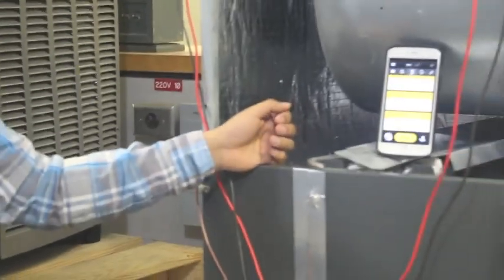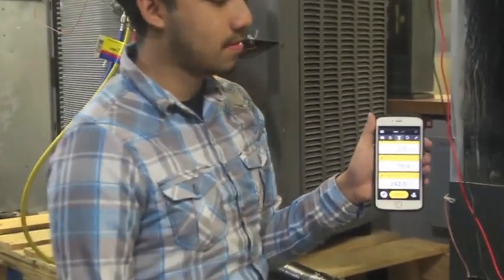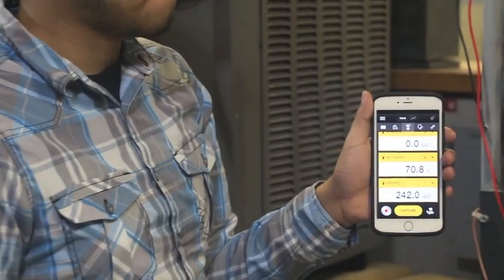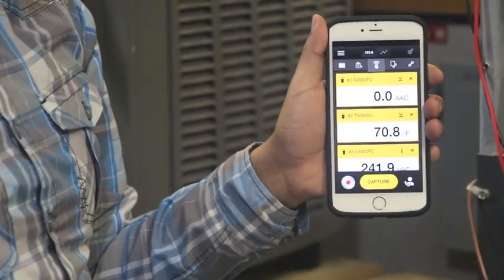Next we have the Fluke app on an iPhone which gives us all readings in one location so we can evaluate how we are charging the system.